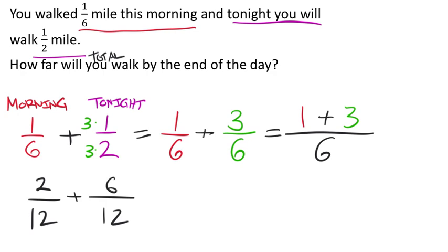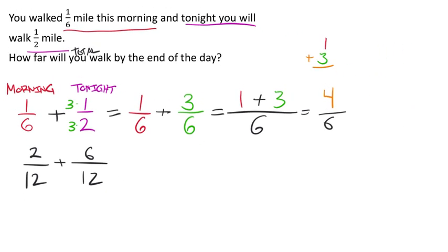Going back to our four-sixths result: this fraction can be simplified because four and six are both divisible by two. Six divided by two is three, and four divided by two is two, giving us two-thirds. Whether you used sixths or twelfths as the common denominator, you end up with the same simplified answer.